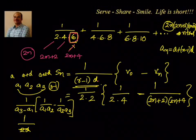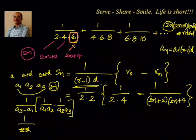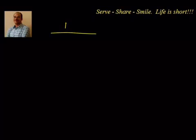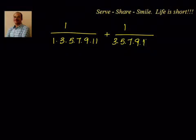This is one type of problem solvable using the VN method. Just before closing, let's take another example with more terms to build confidence. Suppose we have to find the sum of 1/(1·3·5·7·9·11) + 1/(3·5·7·9·11·13) + ... for N terms. We will apply the formula and finish it quickly.